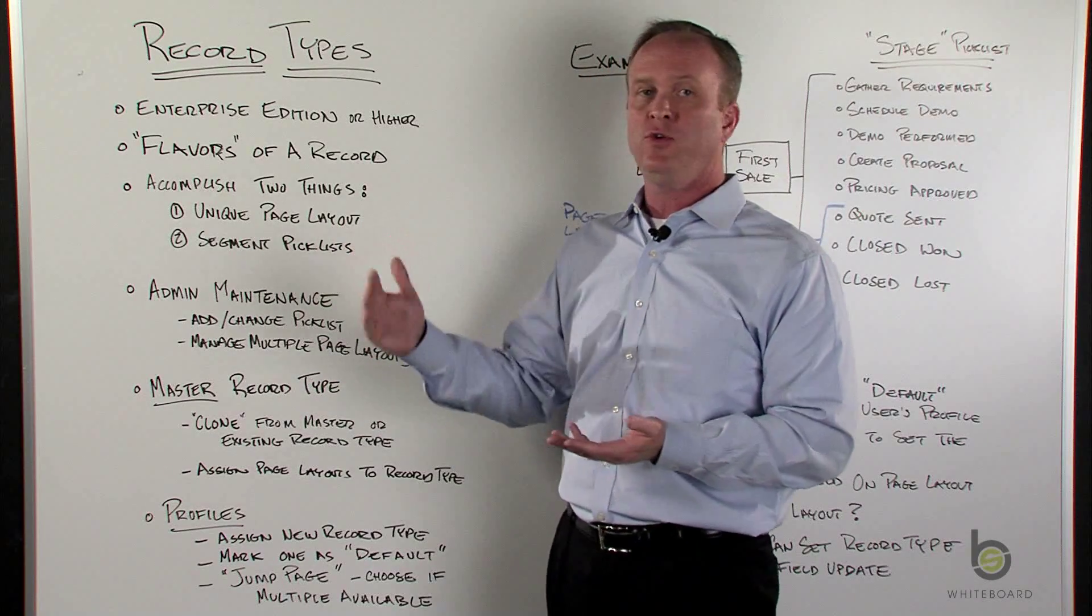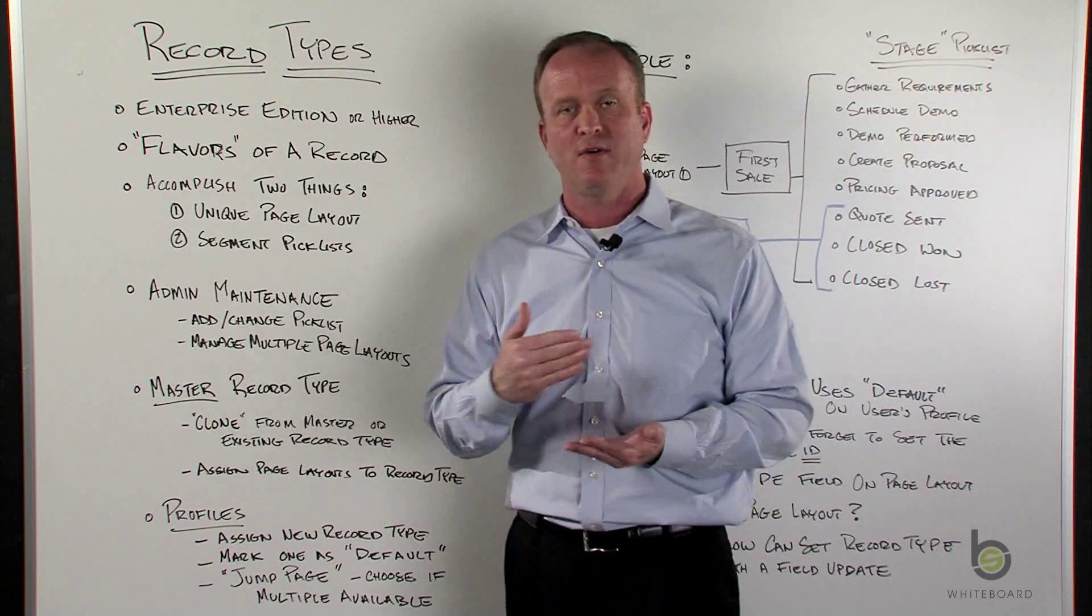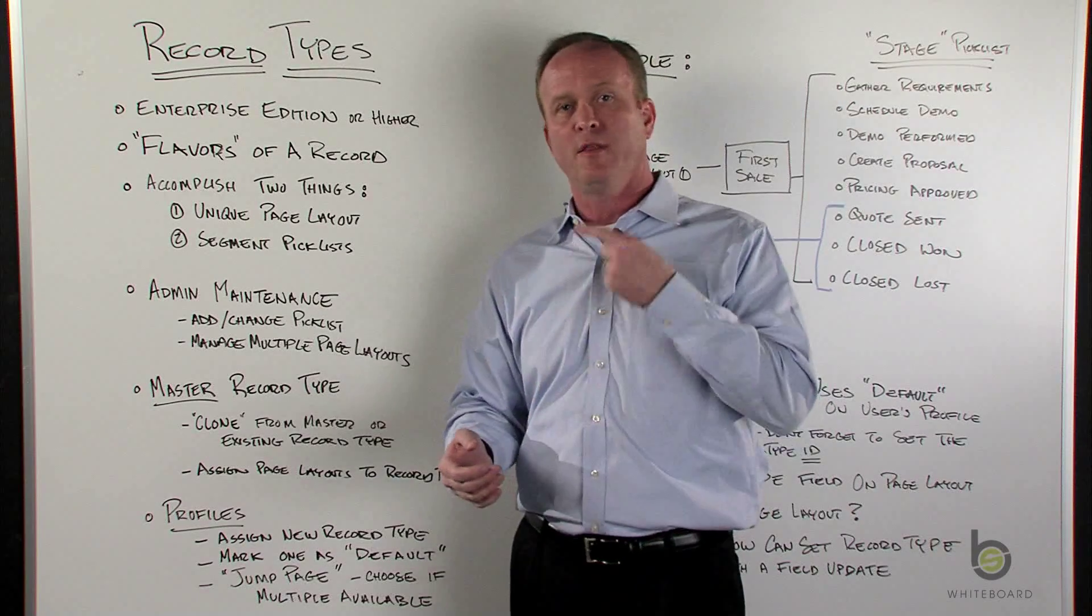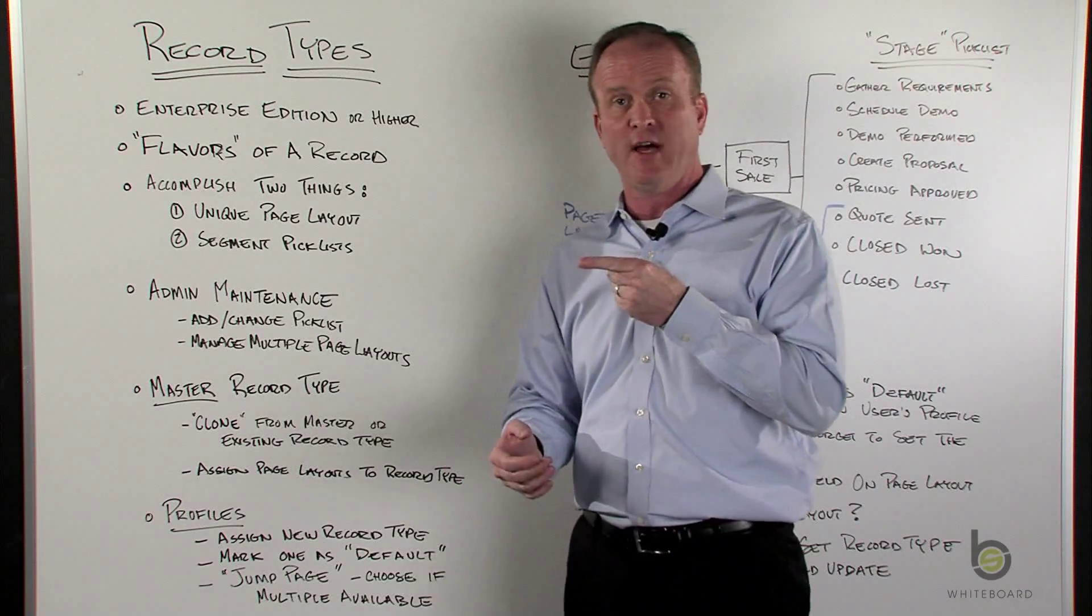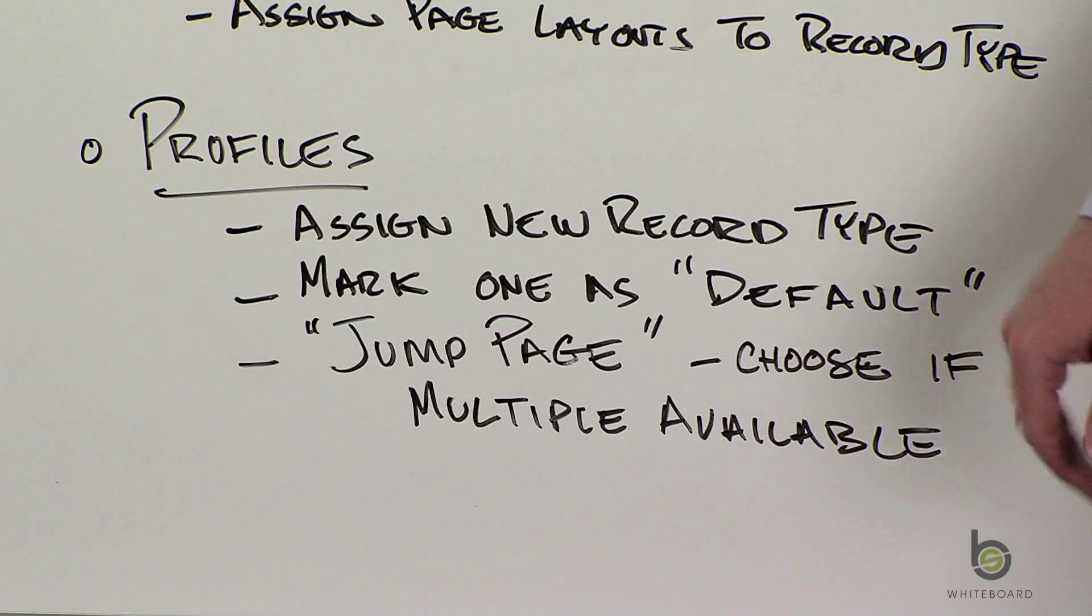Basically it's a page that they see before they create the record, where the user can choose any record type that's available to that profile. The first option and what's available will be their default that you've selected. But then they can pick that flavor of record type before they create the record.